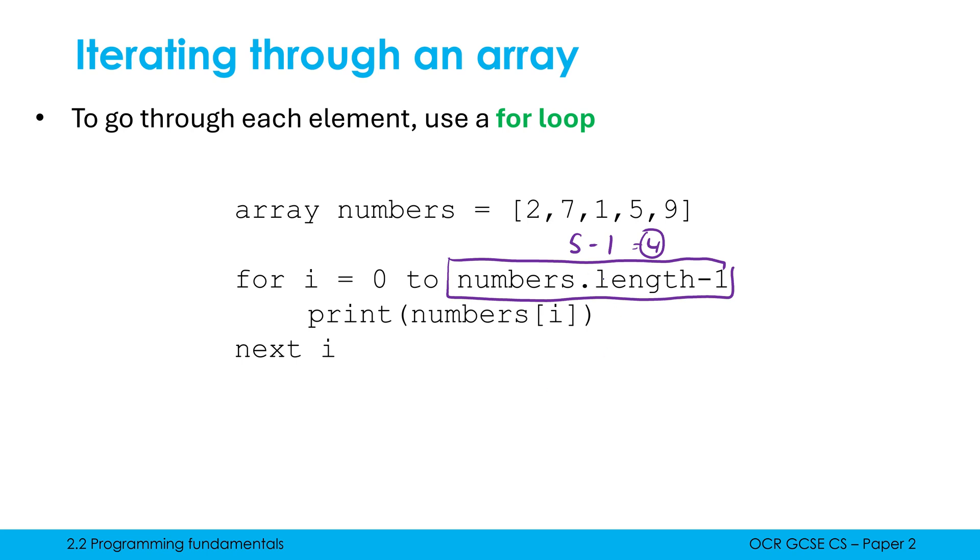Where is this coming from? This is coming from the fact that we are trying to use each of our index numbers. Inside the loop, we are printing numbers index i. So i is getting subbed in with a number, initially zero, then one, then two, then three, then four. When it hits five, we stop.